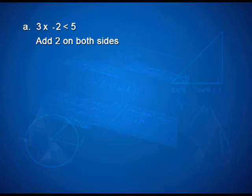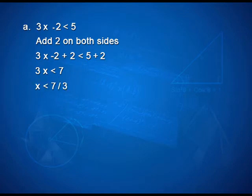To solve the inequality 3x minus 2 is less than 5, I need to get rid of the minus 2 on the left hand side. Therefore, add 2 on both sides to get 3x minus 2 plus 2 is less than 5 plus 2. So 3x is less than 7, or x is less than 7 by 3. When x is an integer, all the integers less than 7 by 3 would be included in the answer.